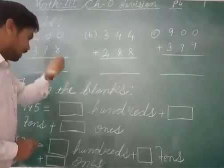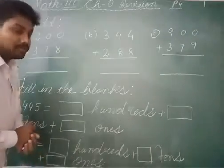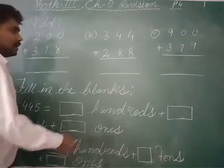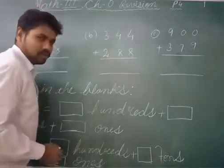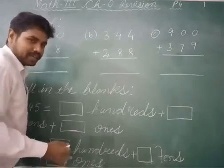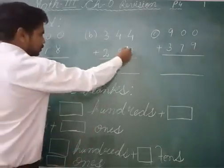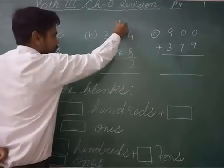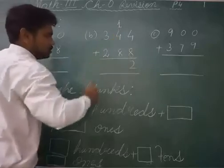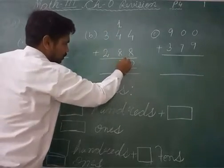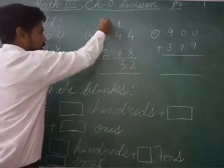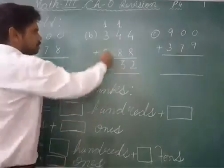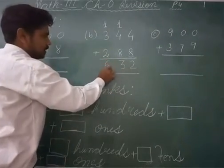Question number B, which we have, is 344 plus 288. Here, 8 plus 4: we know 8 plus 2 is 10, 10 plus 2 is 12. So 12 — write 2 here and carry 1. Again, 8 plus 4 is 12 plus 1 is 13 — write 3 here and carry 1. Then 3 plus 2 is 5, plus 1 is 6. So the answer is 632.